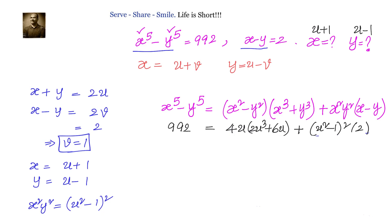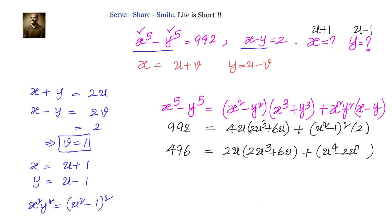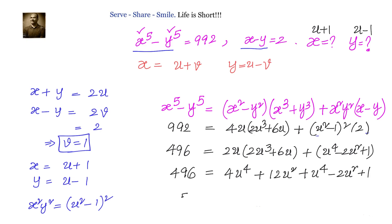Dividing throughout by 2, we have 496 equals 2u times 2u cubed plus 6u, plus u squared minus 1 whole squared. Expanding: 2u times 2u cubed plus 6u gives 4u to the power 4 plus 12u squared. And u squared minus 1 whole squared gives u power 4 minus 2u squared plus 1. Combining: 4u power 4 plus 12u squared plus u power 4 minus 2u squared plus 1 equals 496. Bringing everything to one side: 5u power 4 plus 10u squared minus 495 equals 0. Dividing by 5: u power 4 plus 2u squared minus 99 equals 0.